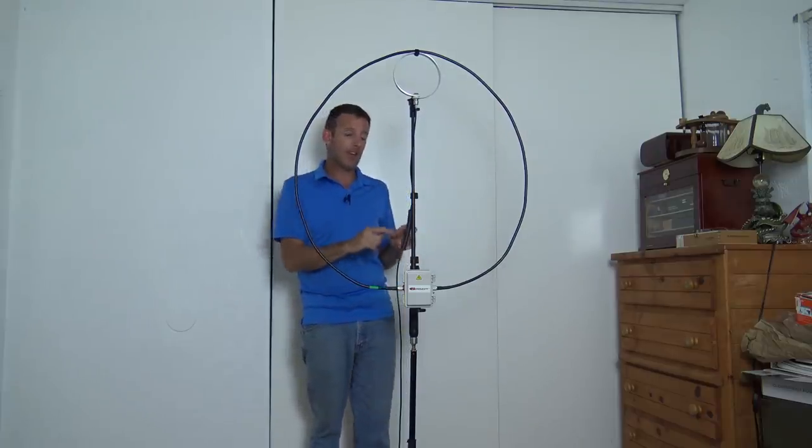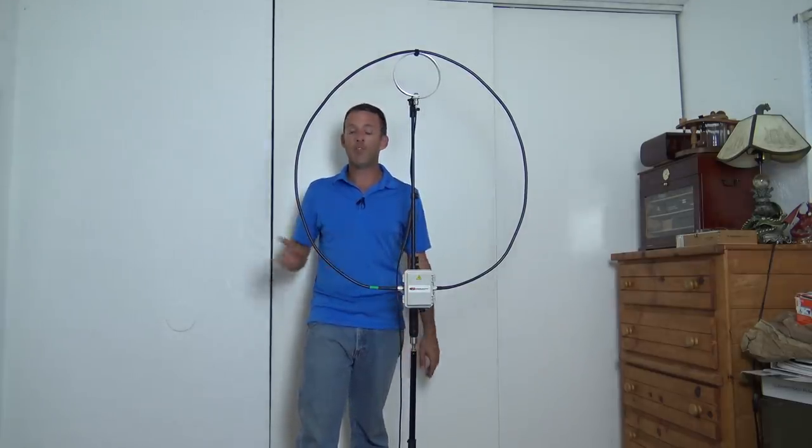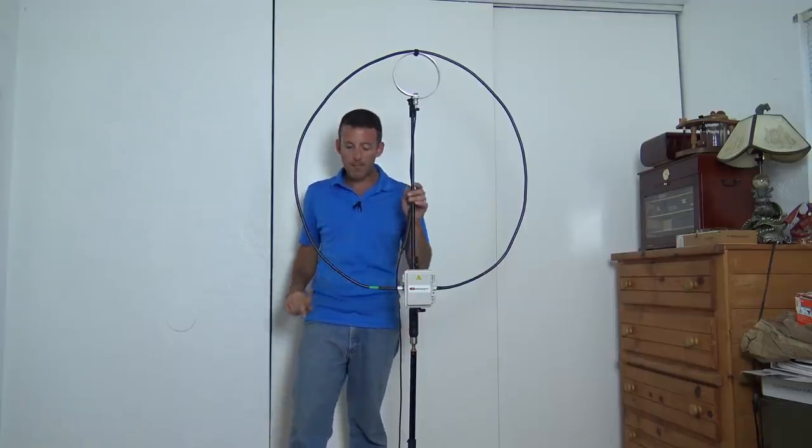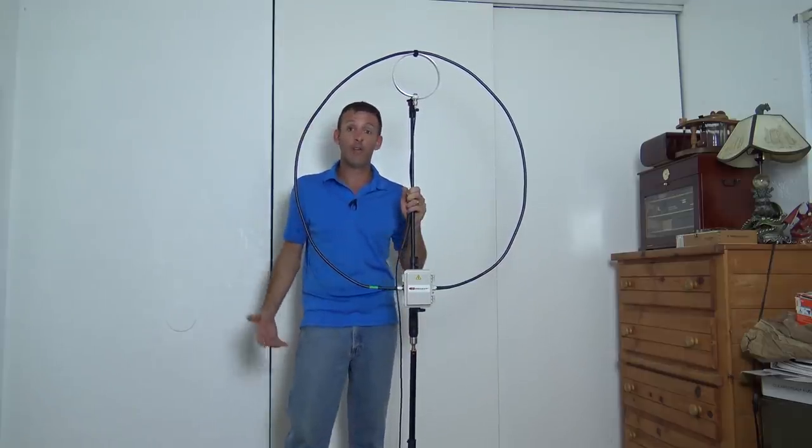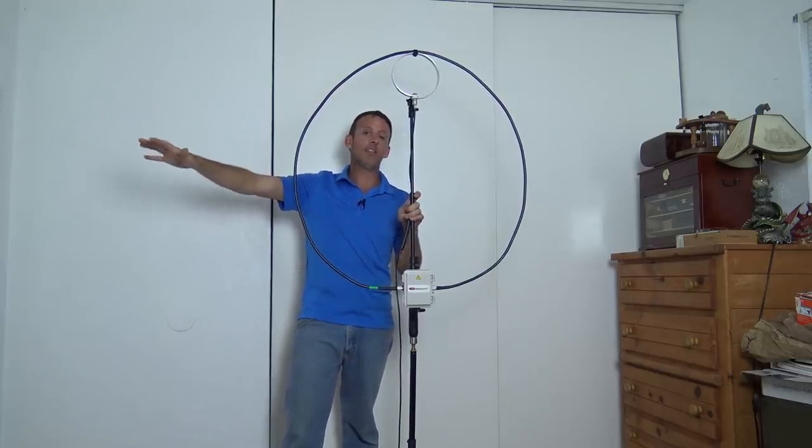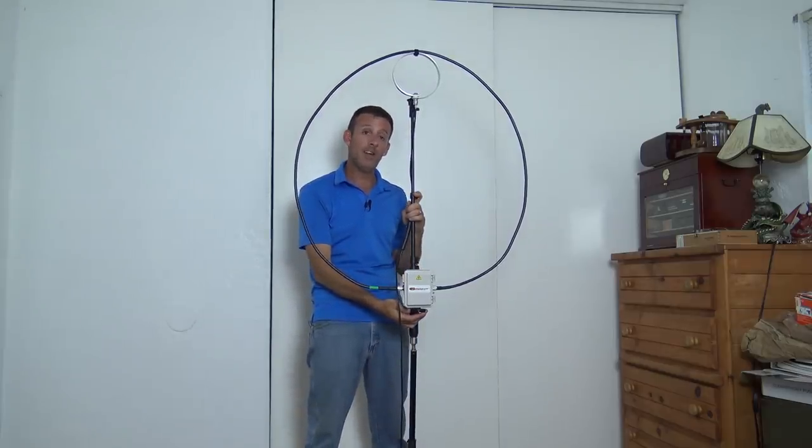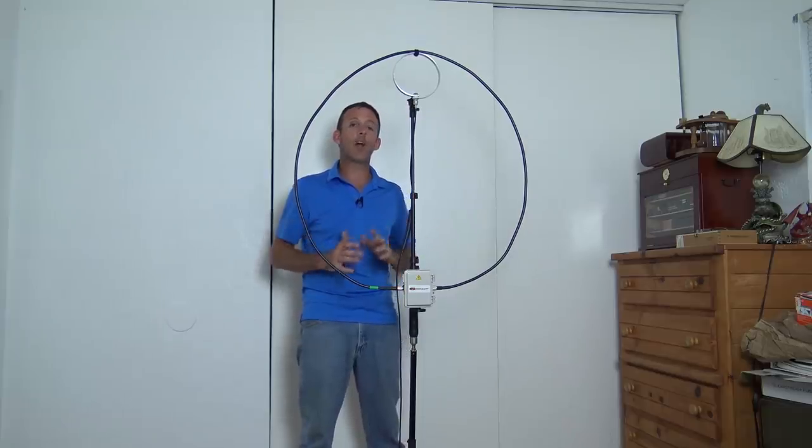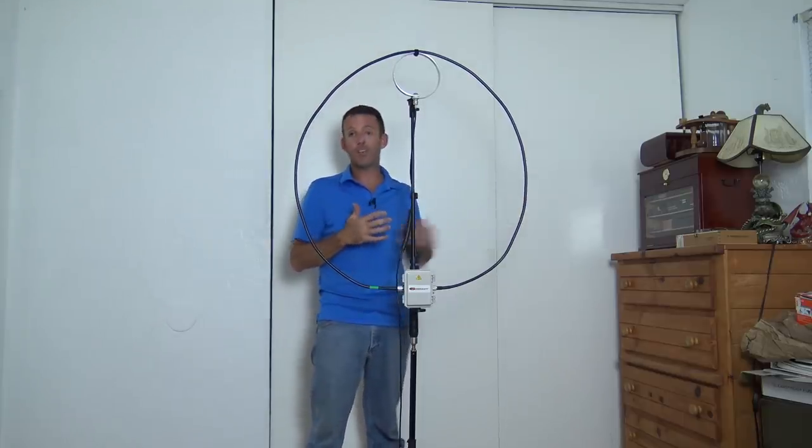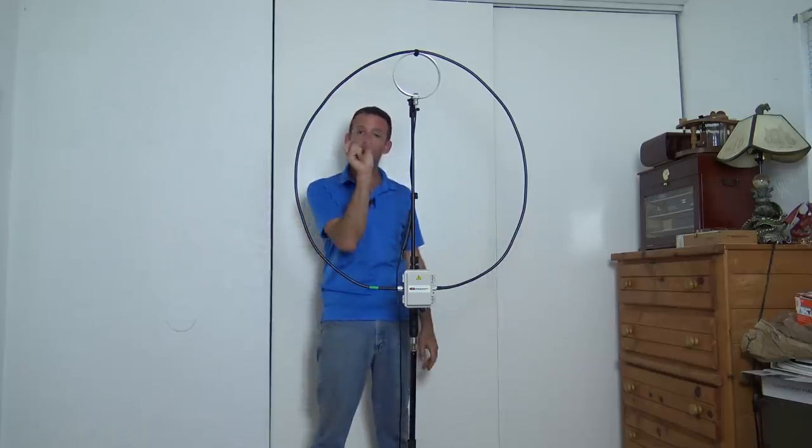But you can't take this thing tuned for 20 and switch it to 10 meters and expect to hear anything. It's going to be way off. But you know why I like that? Because when I'm at a portable event like Pelican Island special event station or field day, you got guys in the pavilion over there that are working with their antennas. And because this is so high Q, I could actually tune this thing for 10 and really not hear any of their harmonics or close proximity RF from their stations on 20 because it's not going to let all that. It's going to reject all that.